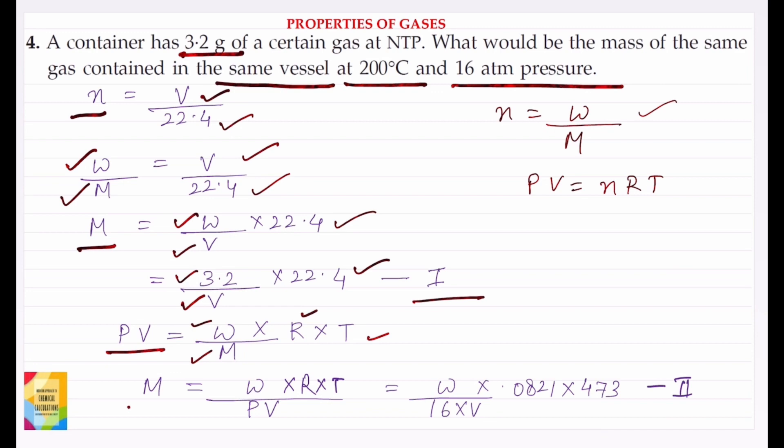From this, the value of M is equal to W times R times T divided by P times V. This is equal to W times R value 0.0821 times temperature value 473 Kelvin.